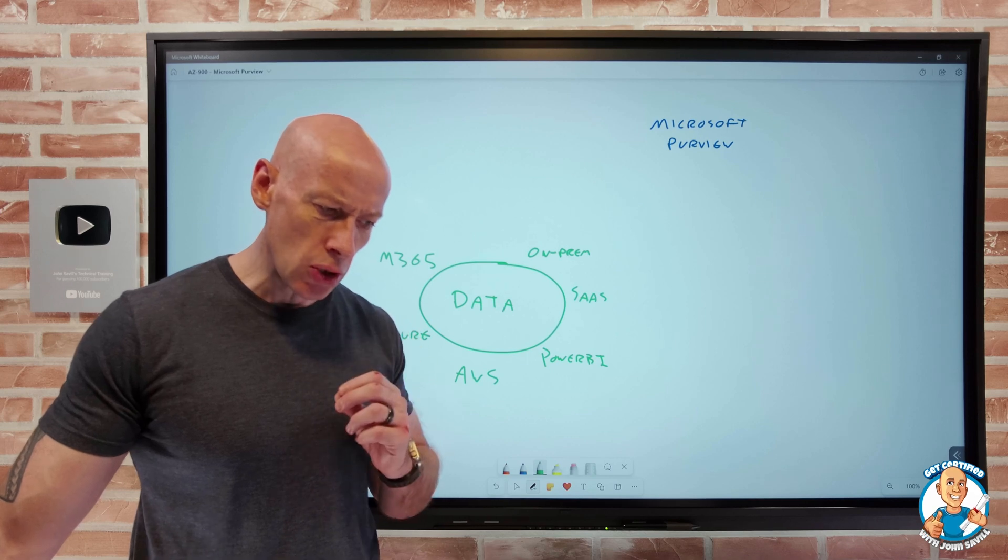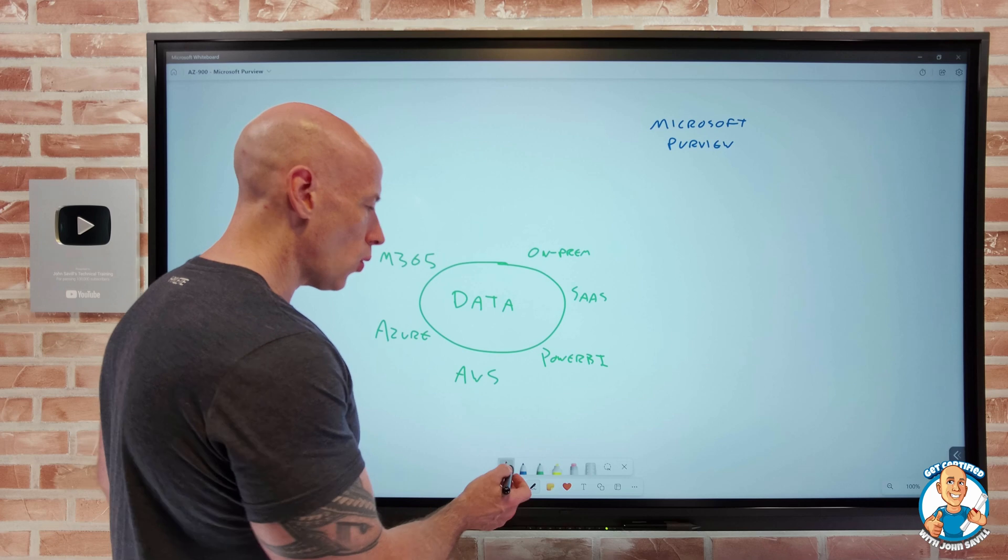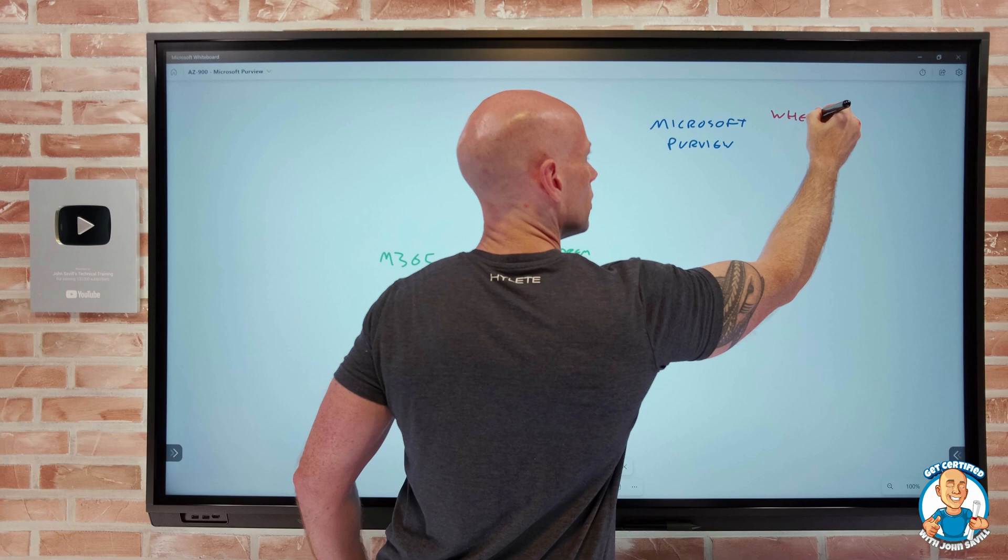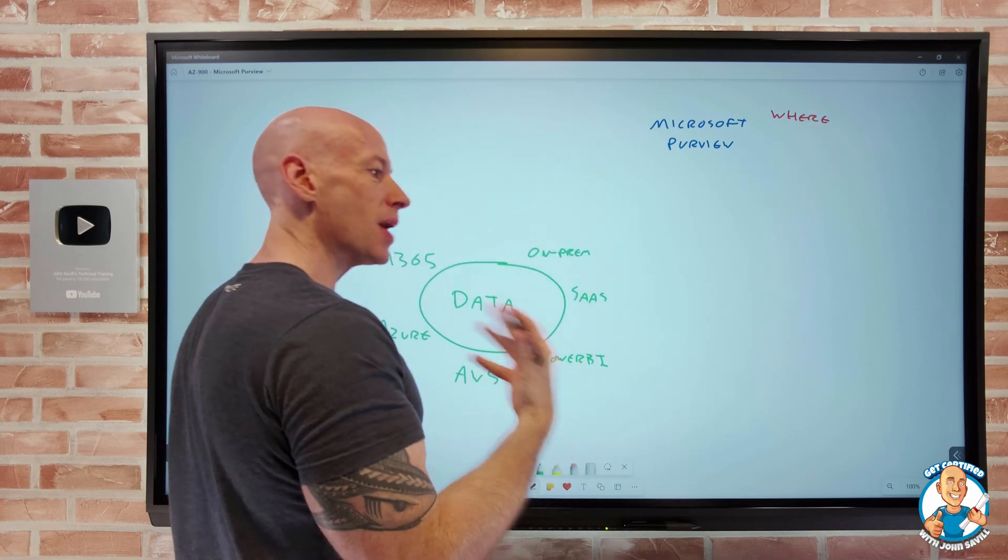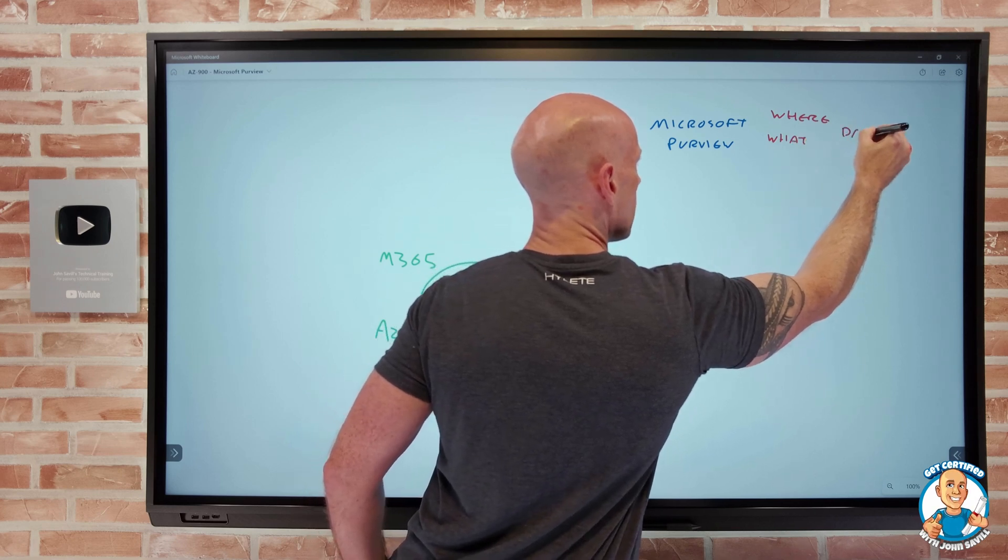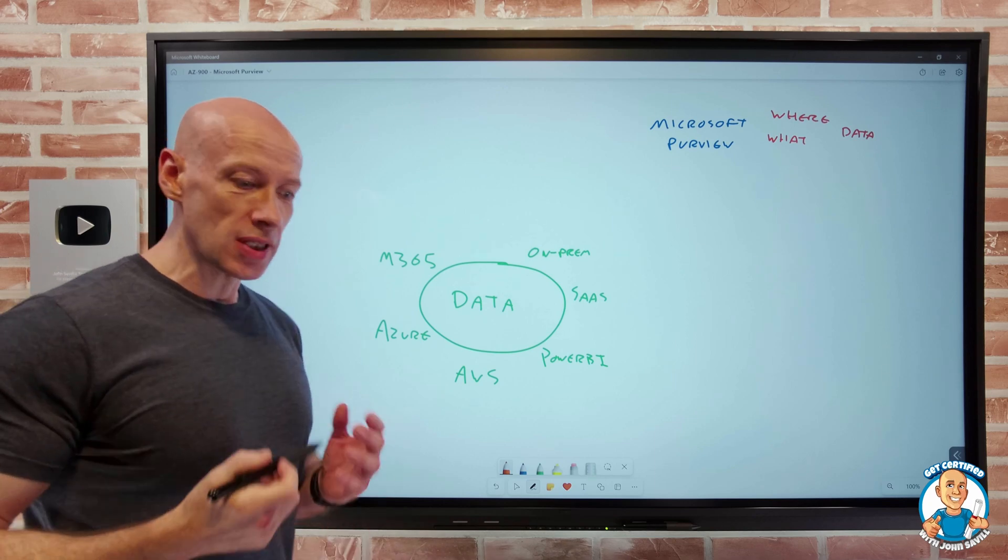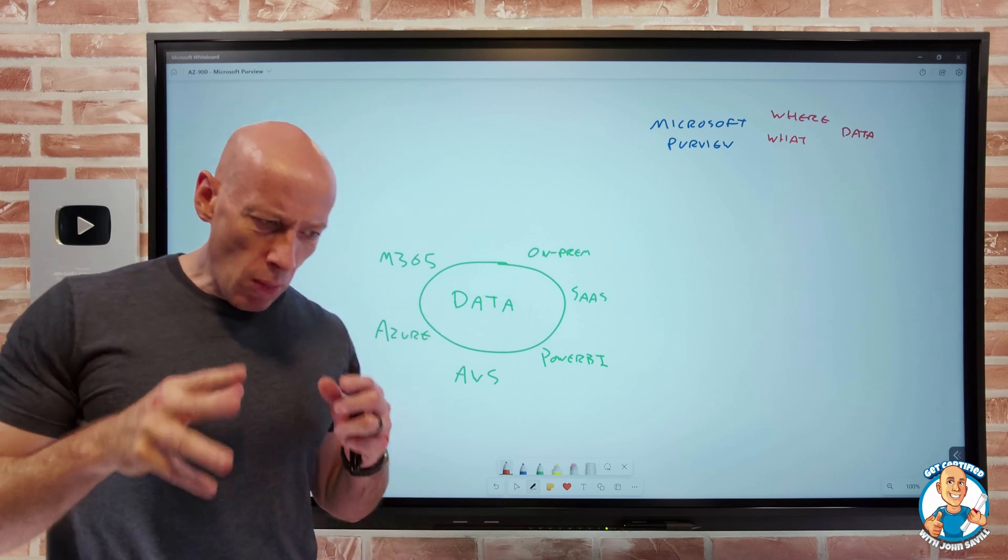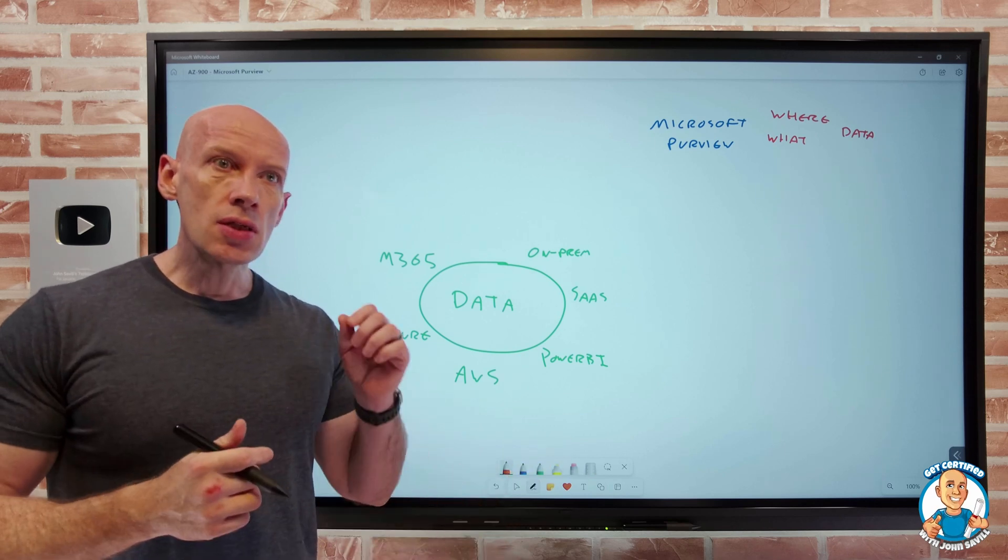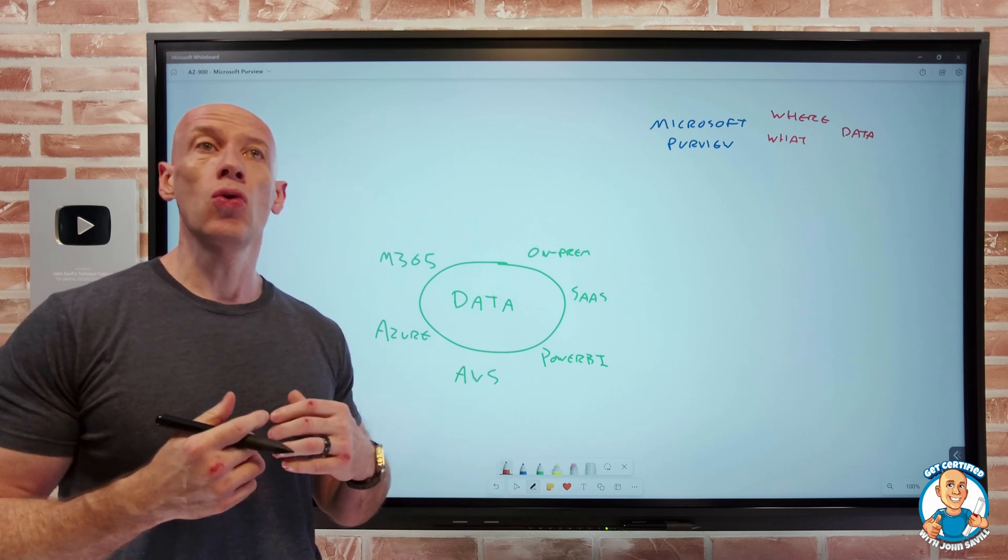And so what we want to be able to do is I need to understand, and this is the key point of what Purview is doing, where is my data and what data is it? Is it important data? Because fundamentally what we want to be able to do is avoid data exposure, and the way we avoid data exposure is to know exactly where that sensitive data is and then take according actions.